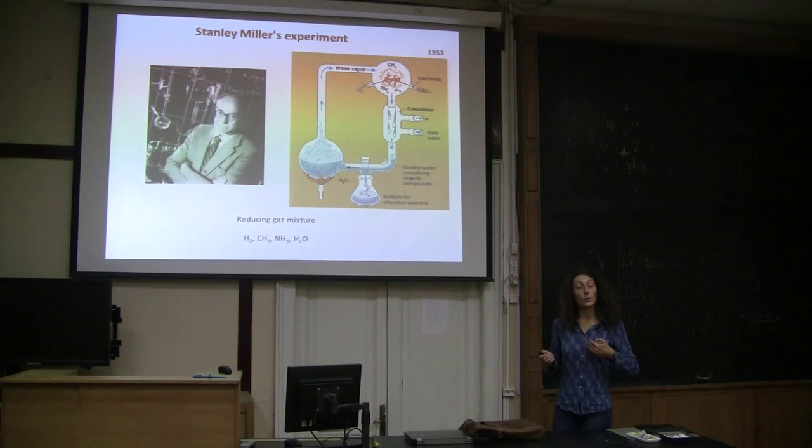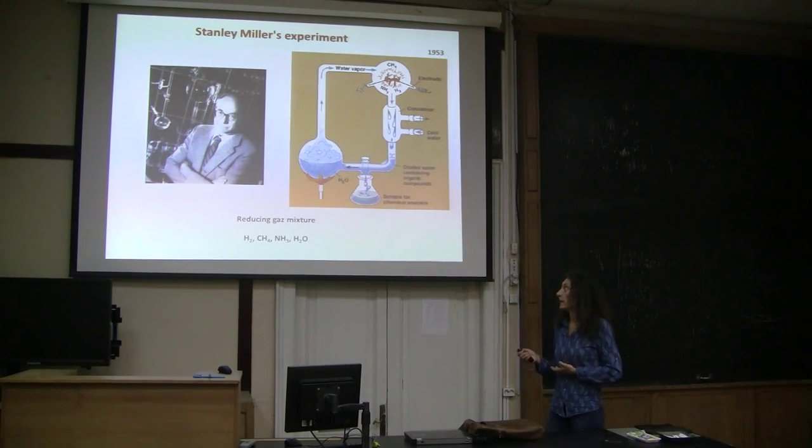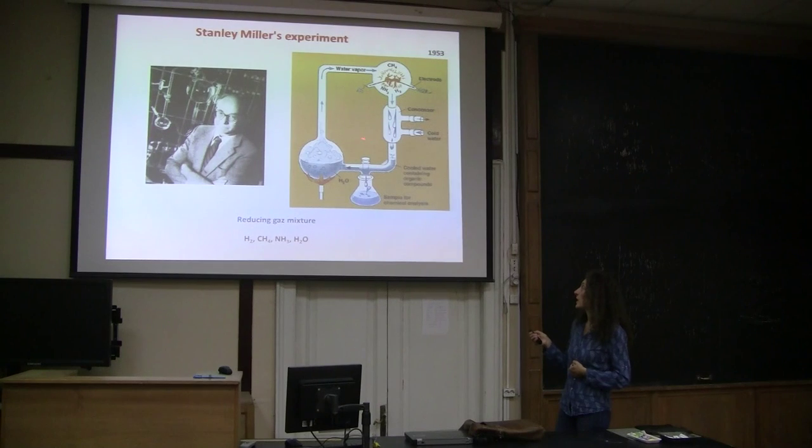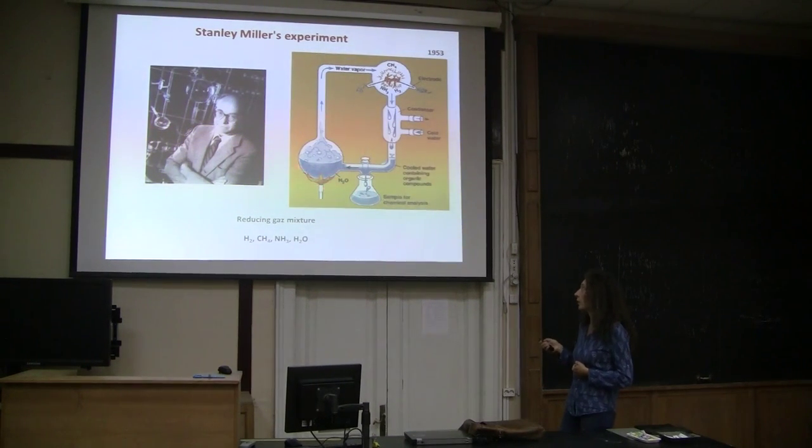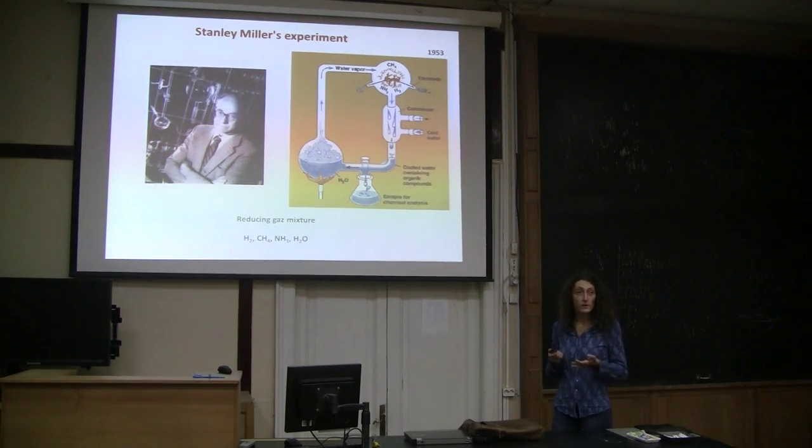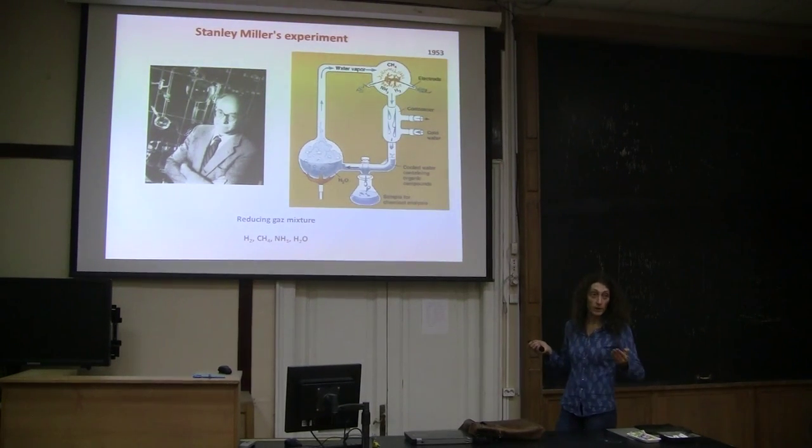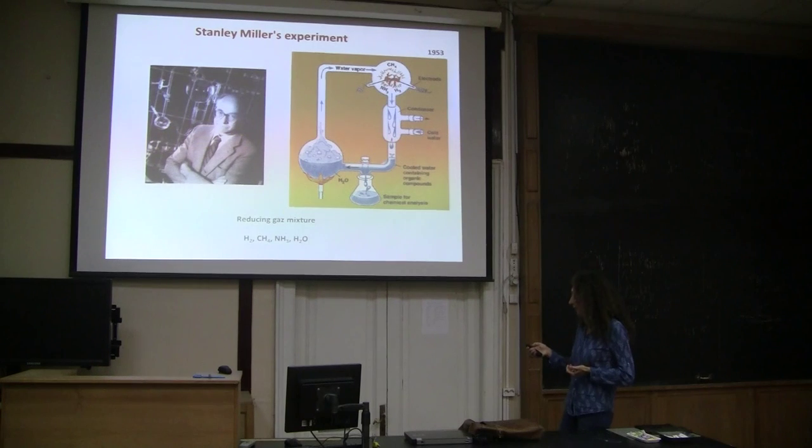These types of models were supported in a sense by the famous experiment by Stanley Miller in 1953, where when he mixed a variety of reduced gases that he thought were important in the primitive atmosphere and while applying heat and electric discharges over some time and recycling all these, he could find the spontaneous formation of organic molecules, simple organic molecules like carboxylic acids, but many other things, organic compounds as well, in this flask. So this was like a kind of support for these initial ideas.